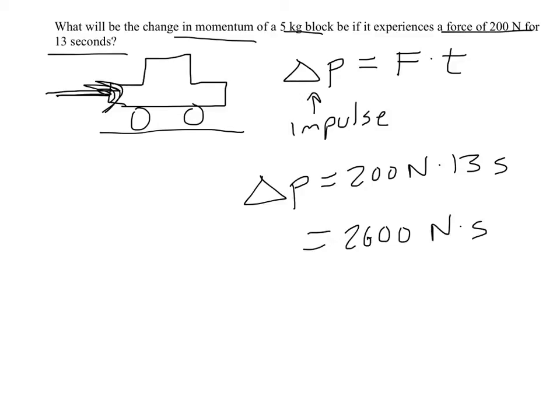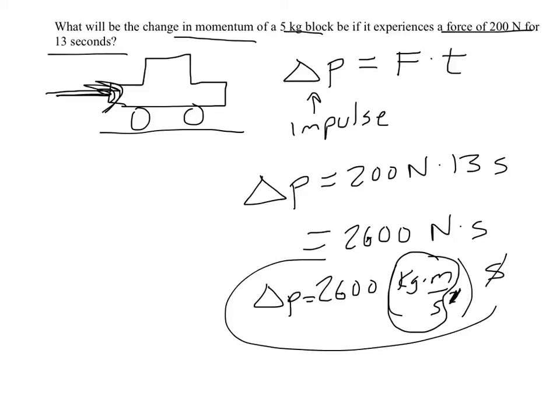If we remember what a newton actually is, it's a kilogram times a meter per second squared. That's a newton. So then if you multiply that by seconds, the seconds cancel, or at least some of them do, leaving you with these units, which kilogram meters per second, you might realize, hey, that's a momentum unit. So that's why this works. So we've calculated the impulse here based on this force in time.